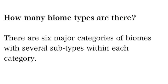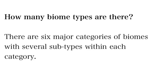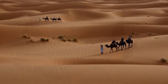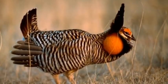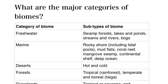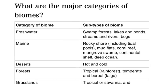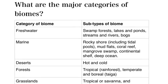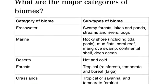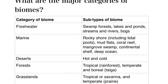So how many kinds of biomes are there? Well, there are six major categories. You know forest, you know desert, you know grasslands, but there's also fresh water, there's marine, which is ocean, and then you've got tundra or alpine.